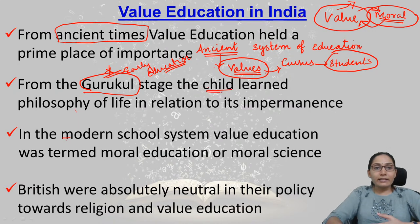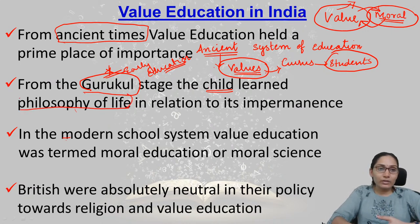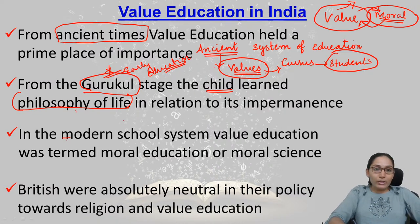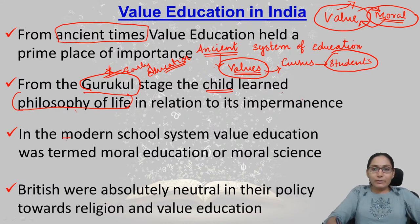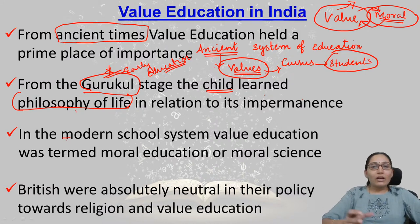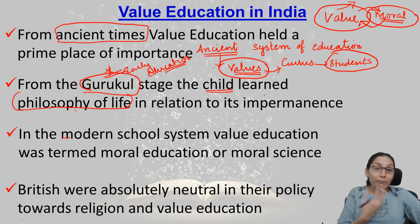From the Gurukul stage, the child learned the philosophy of life in relation to its impermanence — gurus taught students about the philosophy of life. In the modern school system, value education was termed moral education or moral science. As discussed, morals are a part of values — morals are a very important component of value education, but moral education is a narrower concept compared to the broader concept of value education.